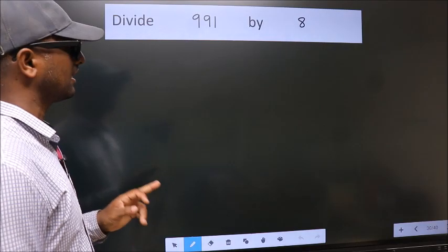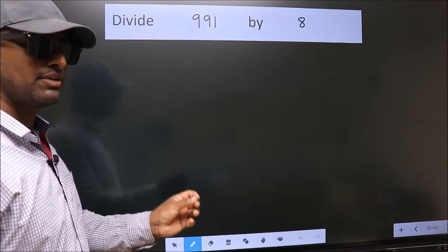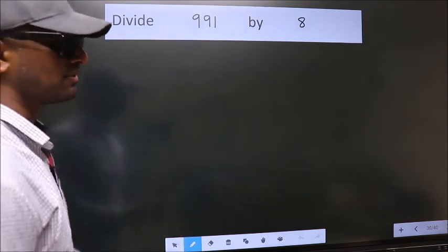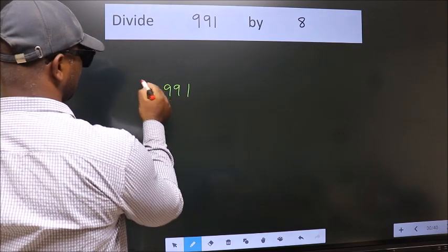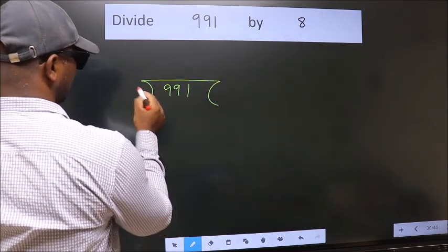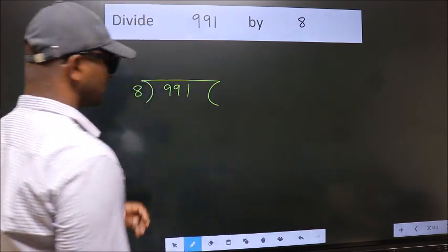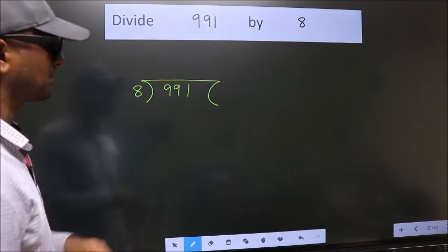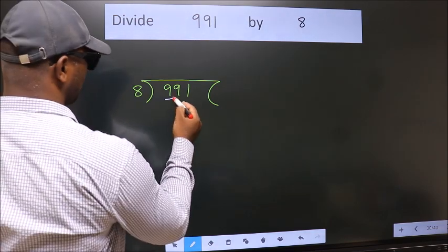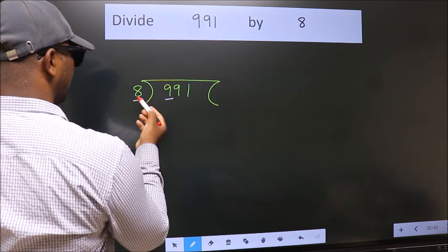Divide 991 by 8. To do this division, we should frame it in this way: 991 here, 8 here. This is your step one. Next, here we have 9. Here, 8. A number close to 9 in the 8 table...